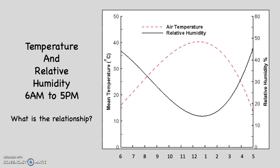Take a look at this graph. Notice the relationship — can you see what it is? The dotted pink line represents air temperature; the solid line represents relative humidity. This is a graph that goes from 6 a.m. until 5 p.m. Notice that when air temperature is at its lowest, relative humidity is at its highest, and when air temperature is at its highest, relative humidity is at its lowest.